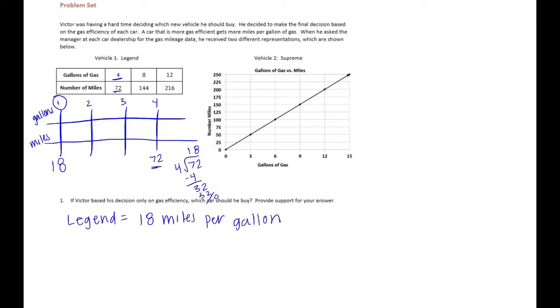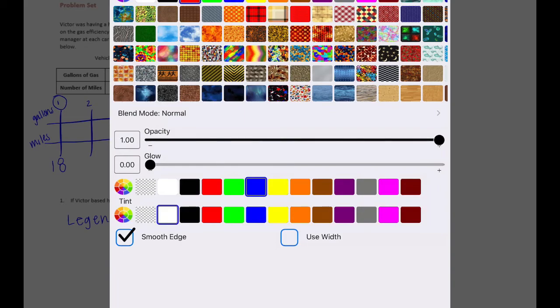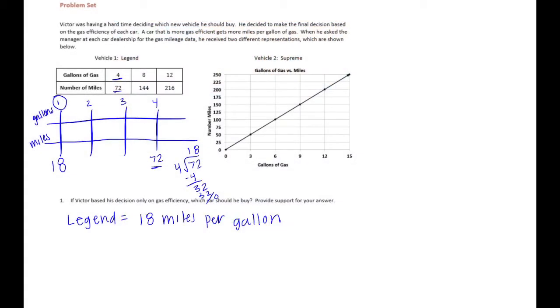Now the Supreme, let's use a different color. The Supreme, three gallons is 50 miles. So three gallons equals 50 miles, but we want to know what one gallon would be. So let's split that. We could do another double line graph and we know that three gallons is 50 miles. So if we wanted one gallon, let's take that 50 and divide it into three equal parts.